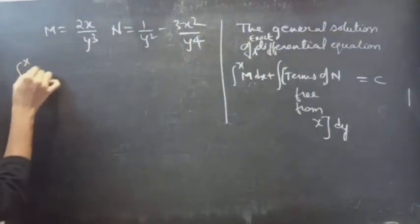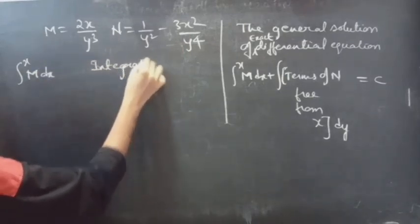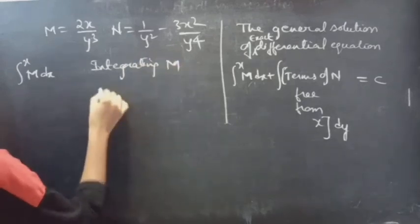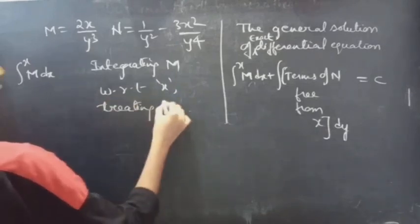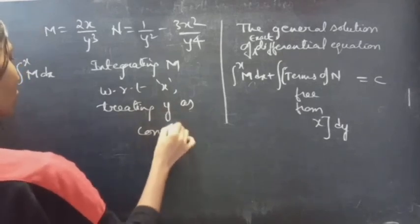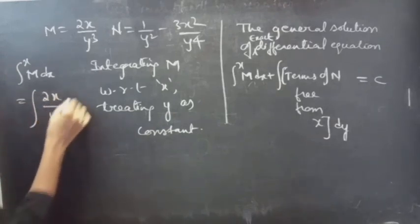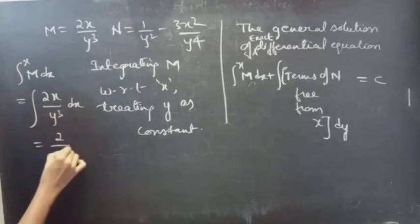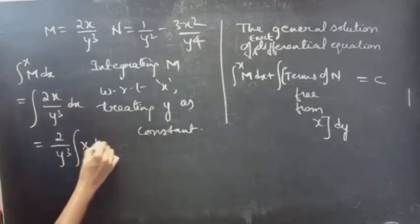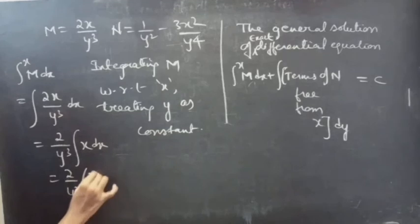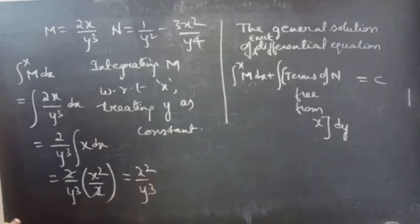Let's consider the first integral: ∫M dx = ∫(2x / y³) dx, integrating with respect to x and treating y as constant. The constants 2 and y³ come outside: (2 / y³) ∫x dx = (2 / y³) · (x² / 2) = x² / y³.